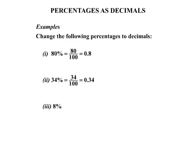Example 3: 8%. Well, 8% means 8 over 100. And on the calculator, 8 divided by 100 gives us 0.08.